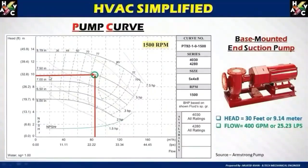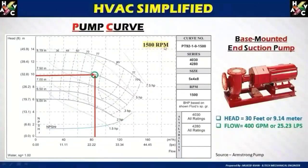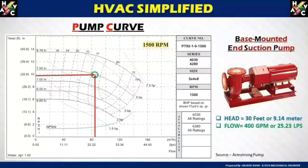At the operating point, the efficiency is more than 70 percent and the impeller size is 7.5 inches. Depending on pump capacity, different impeller sizes can be used. The horsepower shown below is 5 HP, which is consistent with our manual calculation. On the right-hand side you will see the RPM of the pump, and based on this RPM you size a 7.5-inch impeller. The right side also shows capacities and sizes known as the pump series number. This is how you size any chilled water pump based on GPM and head loss.